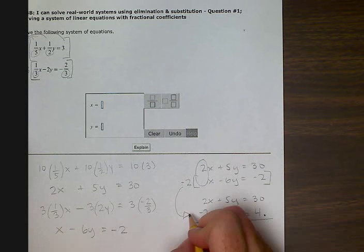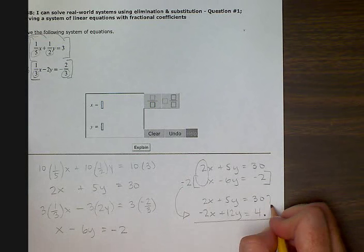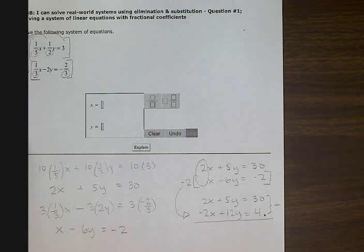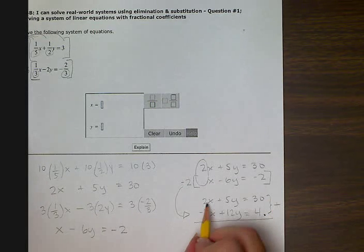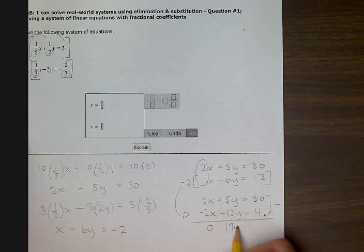Now I'm adding these equations together. And I'm adding. Two x plus negative two x gives me zero x. And five y plus twelve y is seventeen y. Thirty plus four is thirty four.